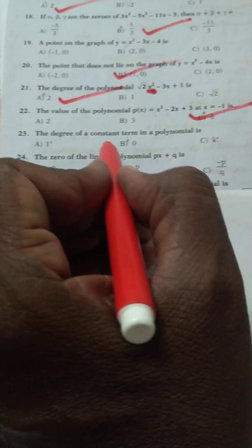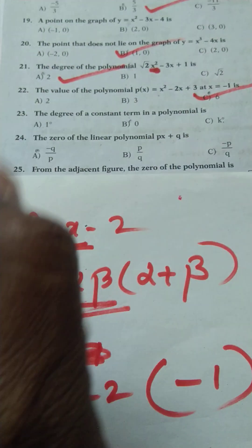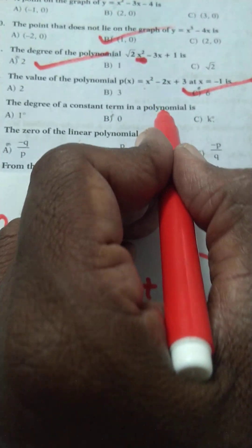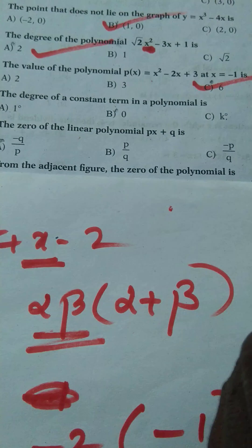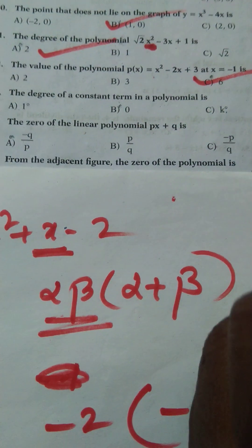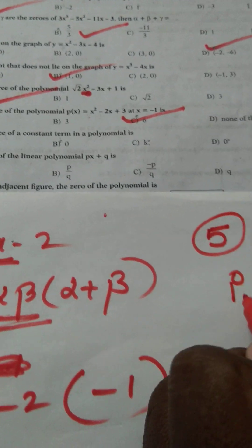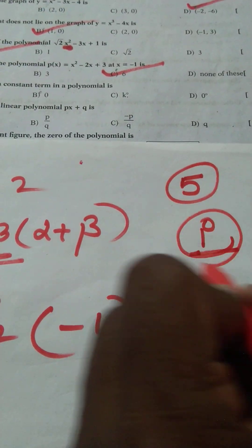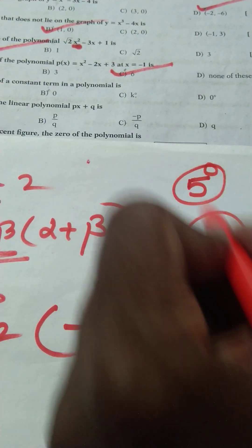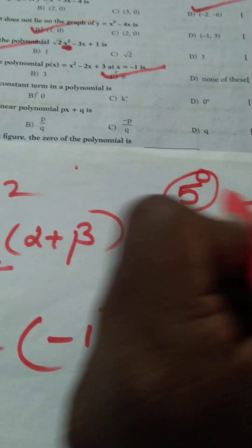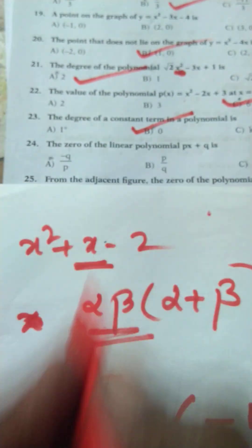The degree of the constant polynomial — this is a very, very important point. The degree of a constant term: 1 is a constant, which can be written as 1 to the power of 0 or 5 to the power of 0, so the degree is 0. Option B is the right option. Don't forget it.